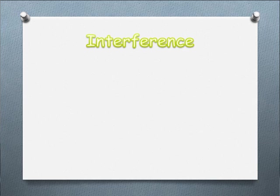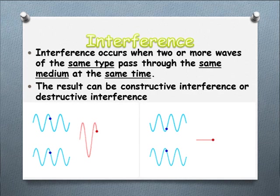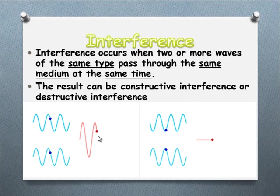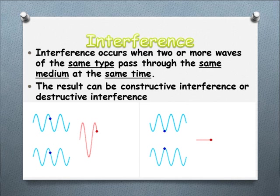Another concept to review that will be useful in this topic is interference — when two waves of the same type are in the same medium at the same time. They can either produce a bigger wave or cancel each other out. When two waves are in phase, the peaks add together and produce a wave twice as big — constructive interference. When they are out of phase by 180 degrees, peaks correspond with troughs and cancel out — destructive interference. Alright, I think we're ready to get stuck into this topic now.